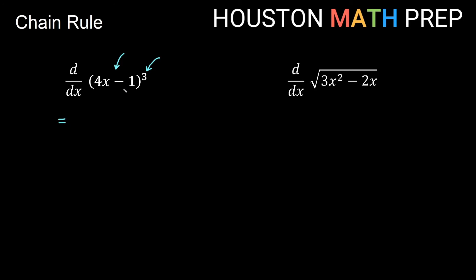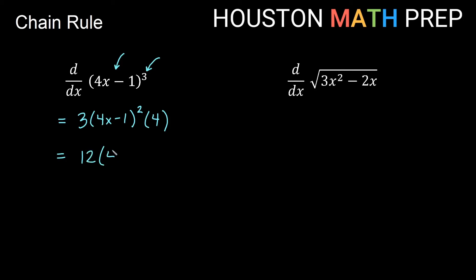So if this were just x cubed, we would use the power rule: the 3 would come out front, multiply the x, and the power would go down by 1. We do a similar thing here with the cube part. So the 3 comes out front — just power rule — and we leave the inside stuff alone. So 3 times 4x minus 1, power going down by 1 gives us squared. Now the chain rule says we then multiply by the derivative of the inside. The derivative of 4x is 4, so we get 12 times the quantity 4x minus 1, all squared.